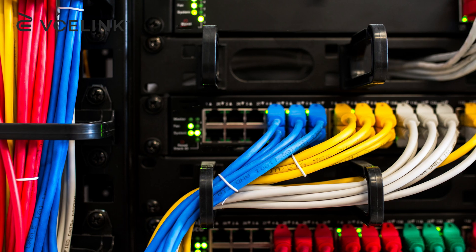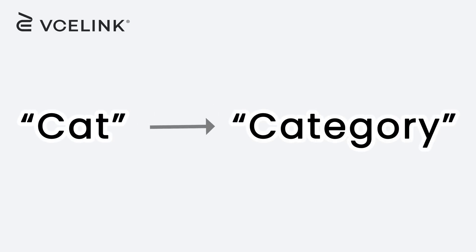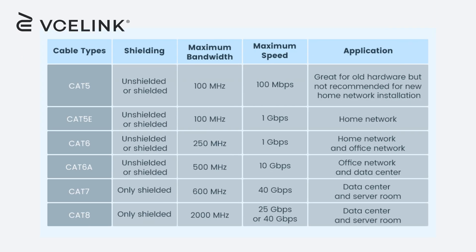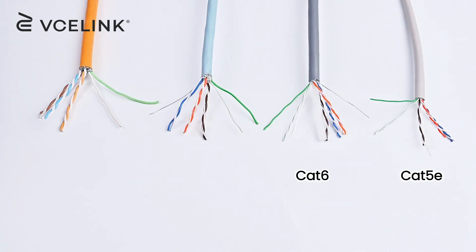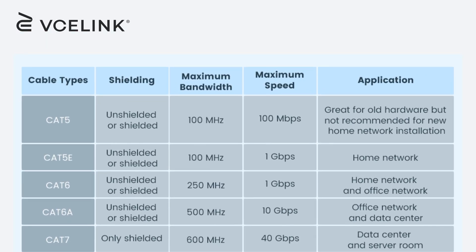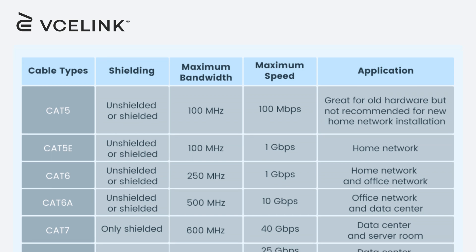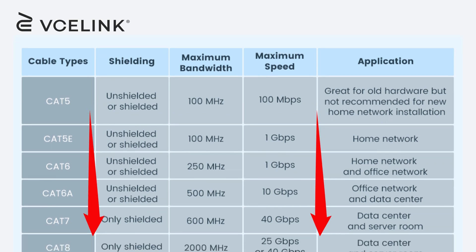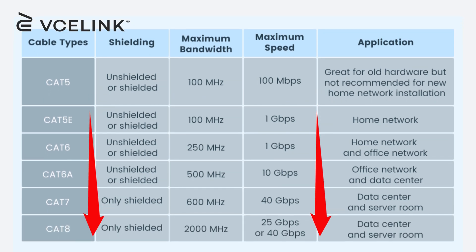In Ethernet cables, CAT is short for category, often followed by a number which means the kind of Ethernet cable specification. You may often see CAT 5E, CAT 6, CAT 7, and CAT 8. The different numbers correspond to different cable performances — the higher the number, the faster the cable.